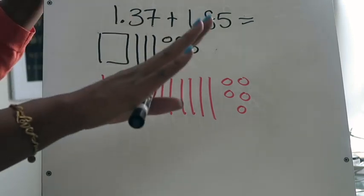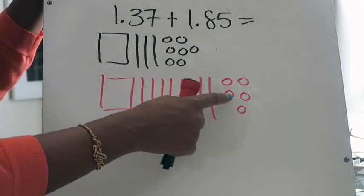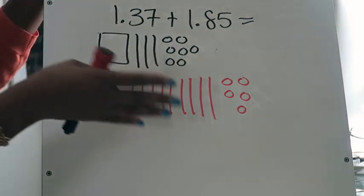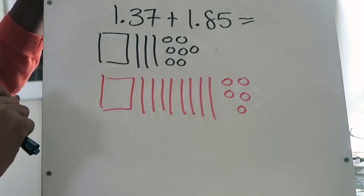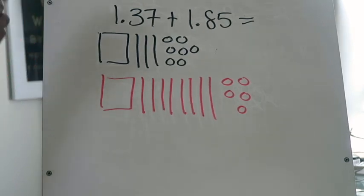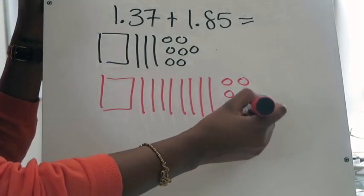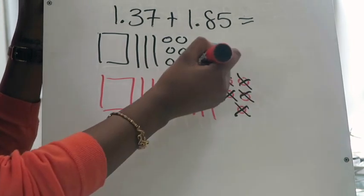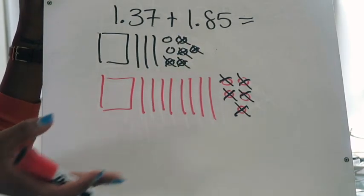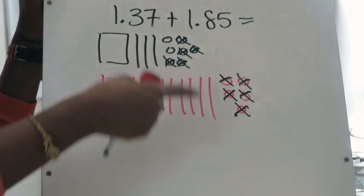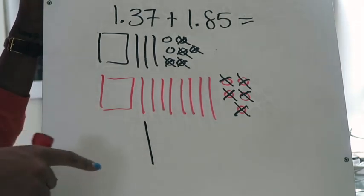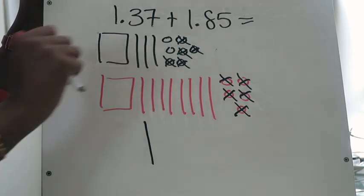We're going to start with our hundredths because that's the furthest place value position to the right. I have a total of twelve hundredths — one, two, three, four, five, six, seven, eight, nine, ten, eleven, twelve — so yes, I do have too many hundredths pieces. I'm going to take ten of these hundredths and regroup them as a tenth, because ten hundredths equals one tenth. It's like having ten dimes and exchanging them for one dollar. So I'll cross out ten hundredths and add a tenth to represent that exchange. There are two hundredths left, and there's nothing else I can do with those.